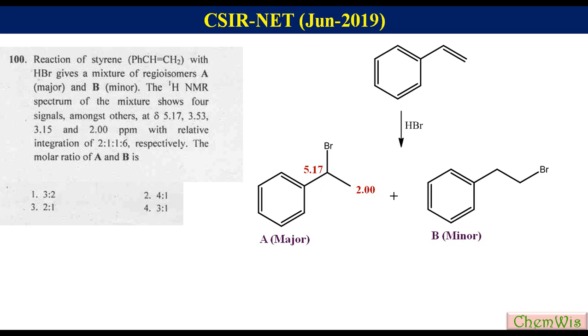You can also guess this assignment based on the integration ratio. Here we can see that the intensity ratio of signals at 5.17 ppm and 2.00 ppm is 2 is to 6 or simply 1 is to 3